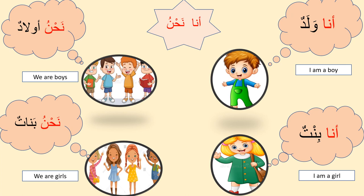Let us revise Ana and Nahnu. 'Ana waladun' — I am a boy. 'Ana bintun' — I am a girl. 'Nahnu auladun' — we are boys. 'Nahnu banatun' — we are girls. Ana is used for singular male and female, and Nahnu is used for male plural and female plural.